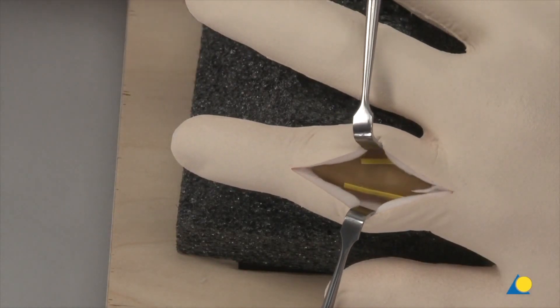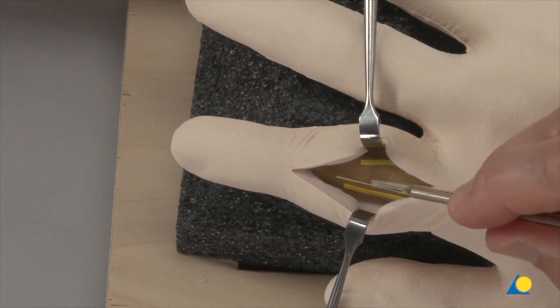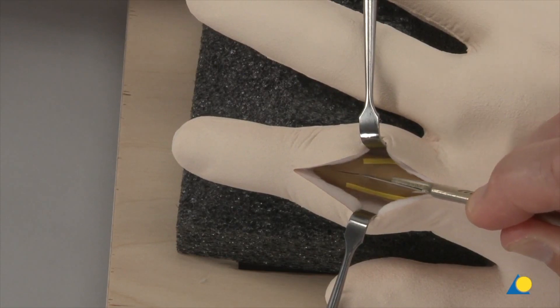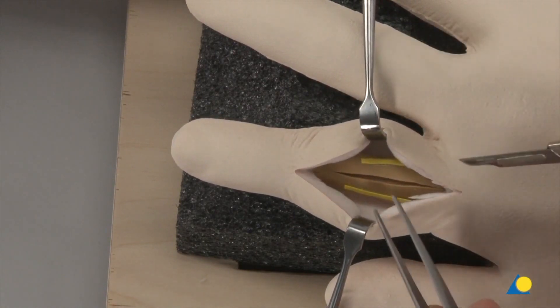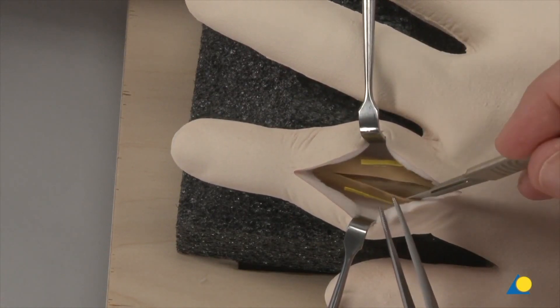After the soft tissue layer is retracted, the extensor apparatus is exposed and the central slip of the extensor tendon is incised longitudinally. The tendon insertion is carefully mobilized.